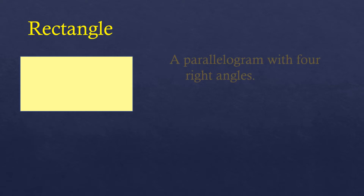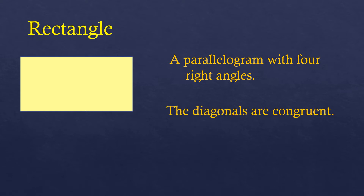Now let's talk about a rectangle. A rectangle is also a parallelogram because it possesses all the properties described in a parallelogram — it has two pairs of opposite parallel sides and equal opposite sides. But in a rectangle, all angles are right angles, which is not always true in a parallelogram. So it's a parallelogram with four right angles. An additional property not in a general parallelogram is that the diagonals are congruent.